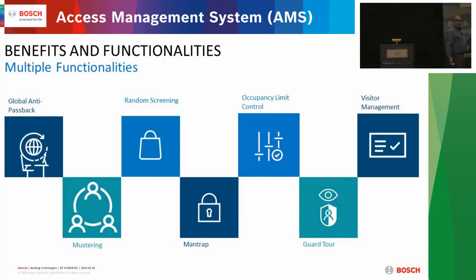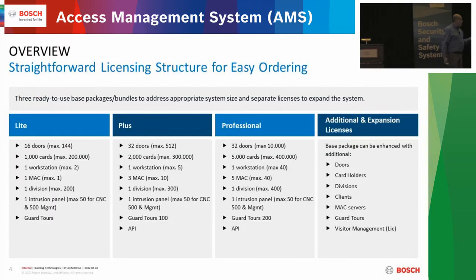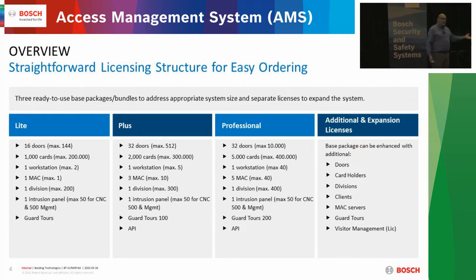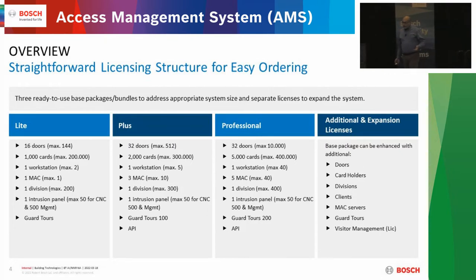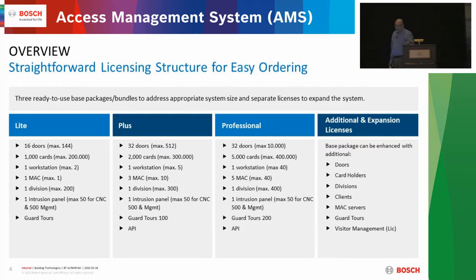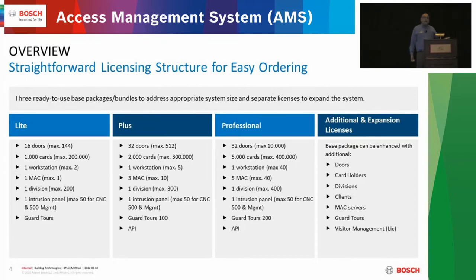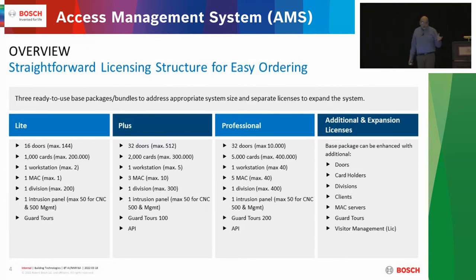Here are your base packages — three bundles you buy as a base license. They come with many of the features already discussed. You start out with a 16-door base, expandable up to 144 doors, 1,000 cards up to a maximum of 200,000 cards, a single workstation, division, intrusion panel in base, and guard tours. You can also use maps, badging, and whatever else you might need, all in your basic platform.